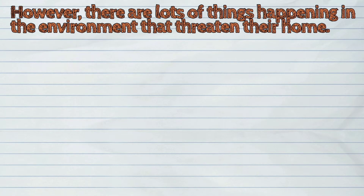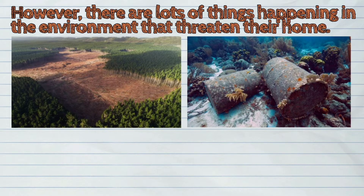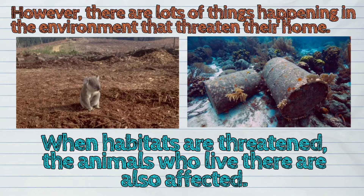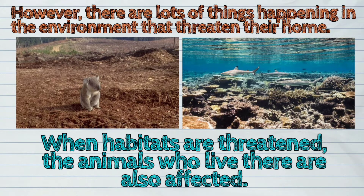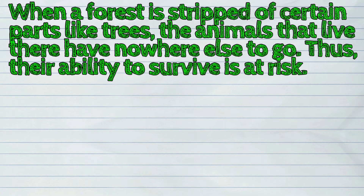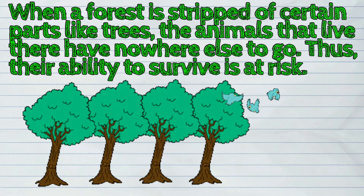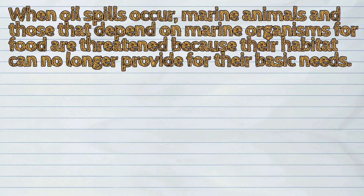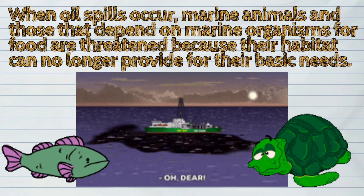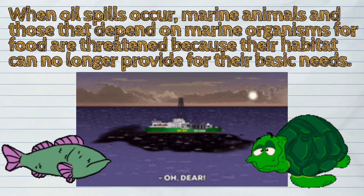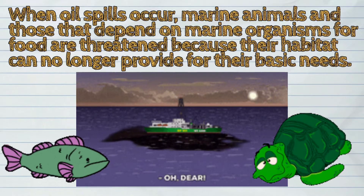However, there are lots of things happening in the environment that threaten their home. When habitats are threatened, the animals who live there are also affected. For example, when a forest is stripped of certain parts like trees, the animals that live there have nowhere else to go, and their ability to survive is at risk. Also, when oil spills occur, marine animals and those that depend on marine organisms for food are threatened, because their habitat can no longer provide for their basic needs.